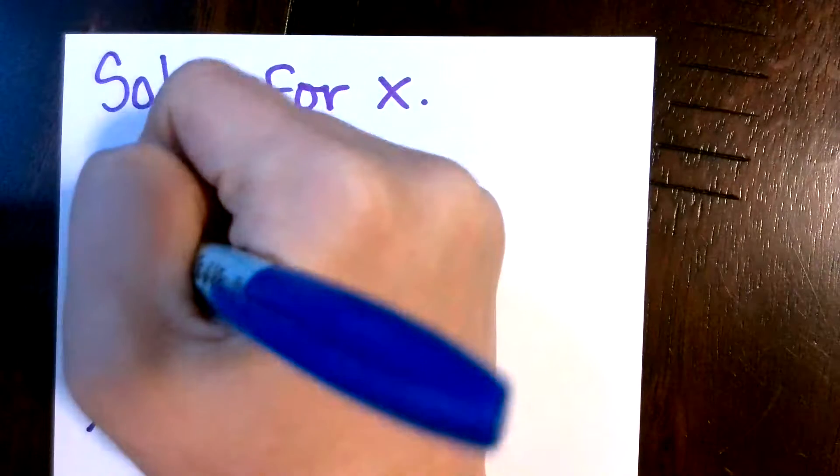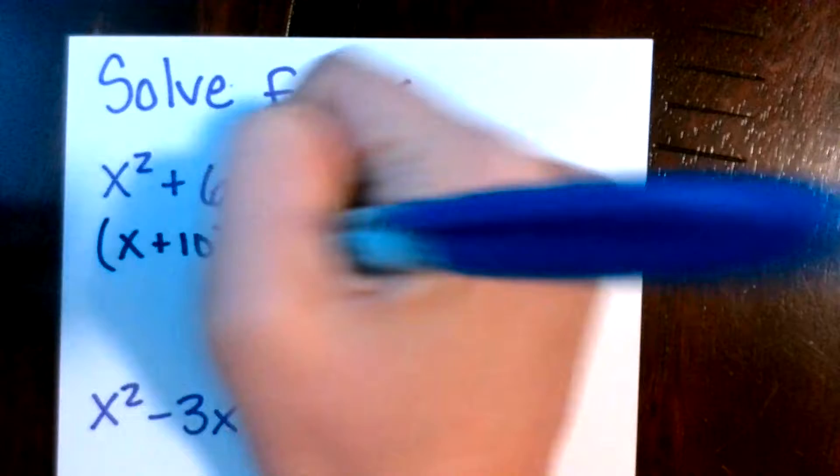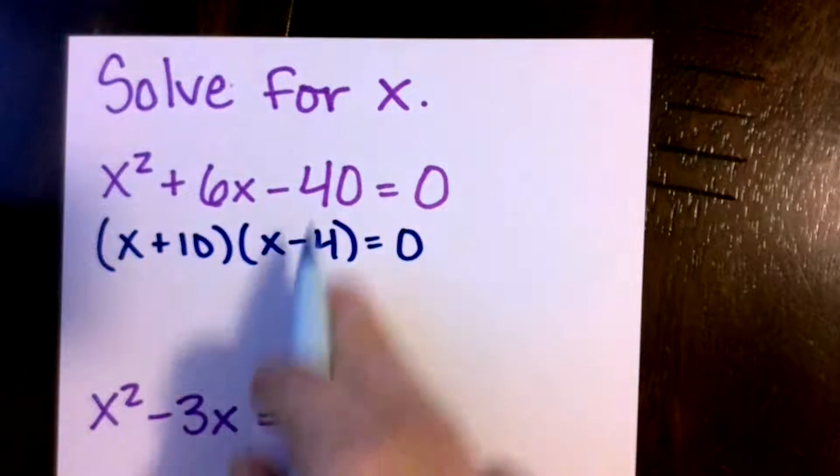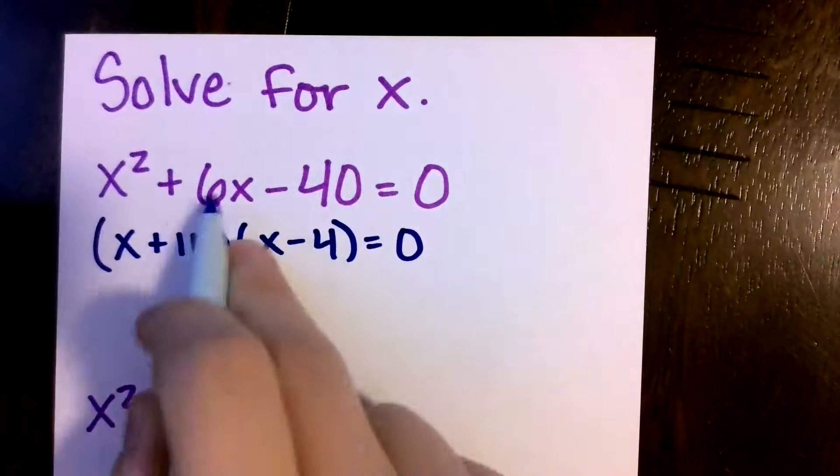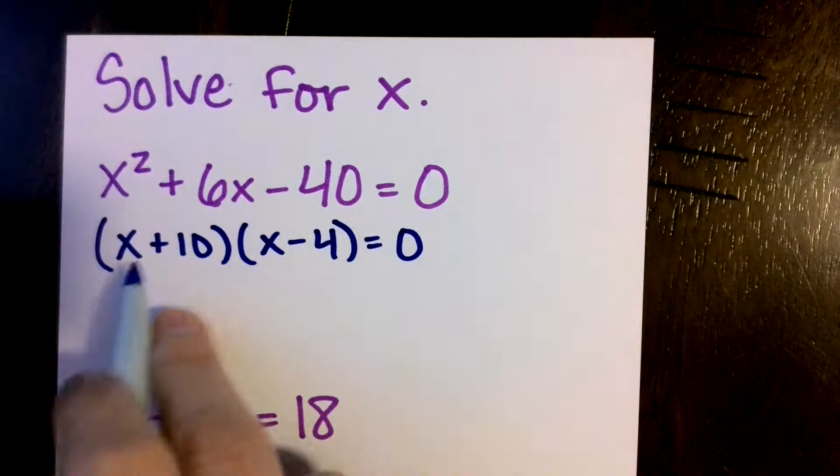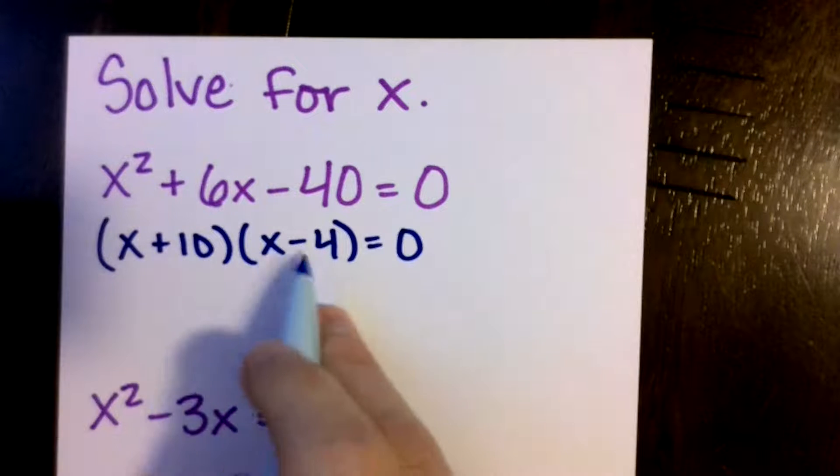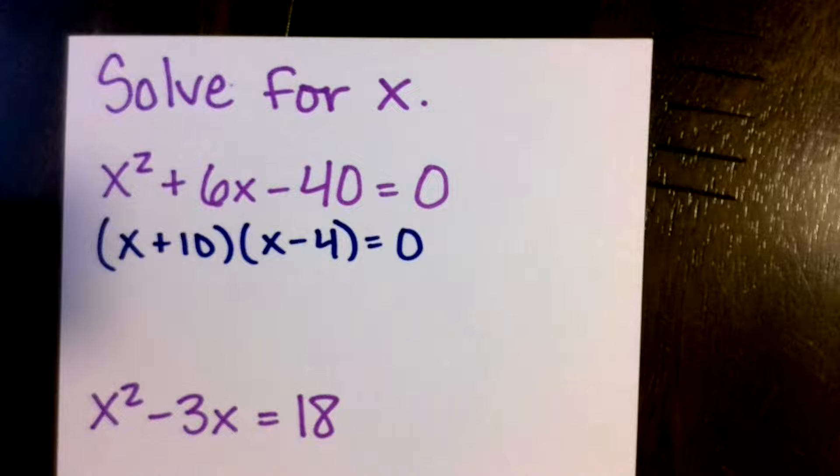So hopefully we landed on a positive 10 and a negative 4. Those would multiply to be a negative 40 and add to be a positive 6. If you have your signs switched, that's why we check at the end because if your signs were switched, they would combine to be a negative 6 instead of a positive 6.